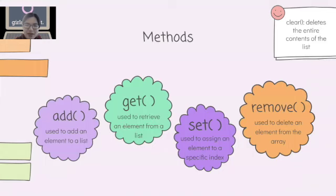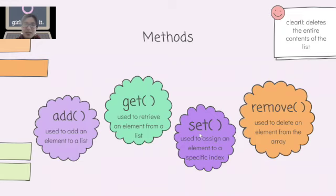These are the four methods we'll be going over for ArrayList: add, get, set, and remove. Hopefully add, get, and remove are pretty self-explanatory — you add something, you can access an element using get, and you can remove something using remove. Set is used if you want to change an element inside the ArrayList — it sets an index to a new value.